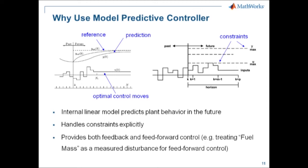The MPC controller handles constraints explicitly — for example, if a valve can only move from 0 to 100%, you can explicitly set those bounds in the controller so they are honored during the optimization at each sample time. The MPC controller also provides both feedback and feedforward control: the EGR and VGT positions are used in feedback loops, while fuel mass input is used as a measured disturbance so the controller can compensate for fuel mass changes in advance.